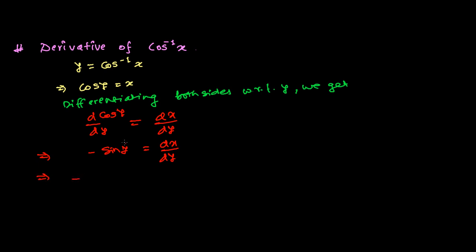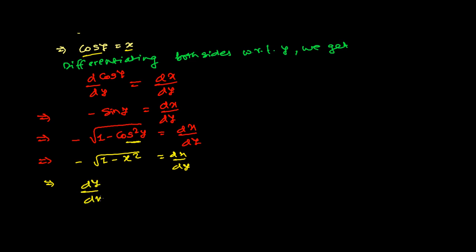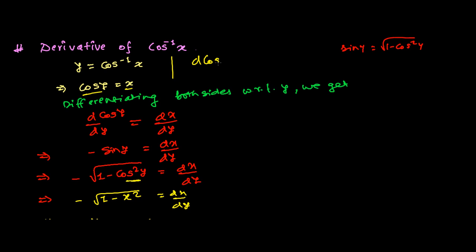So it is minus sine y, and sine y can be written as √(1 - cos²y). Now it is dx/dy. Putting in the value: cos y is x, so instead of cos y we use x. It becomes √(1 - x²) and minus times dx/dy. Rearranging, we get dy/dx = -1/√(1 - x²). This is how we find the derivative of cos inverse x.